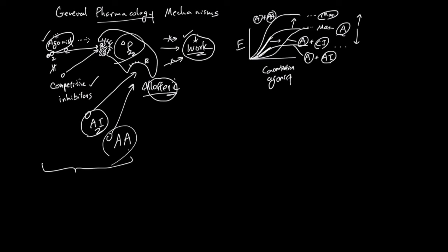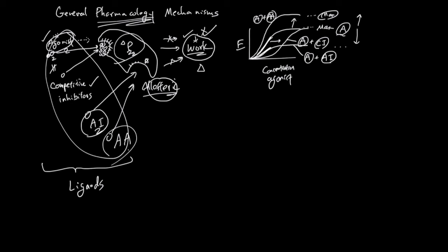All of these things that bind to a protein and start the work, stop the work, or change how much work is done — all these binders are called ligands. Core pharmacology is about designing ligands and designing how to use ligands together to achieve the ideal amount of work.